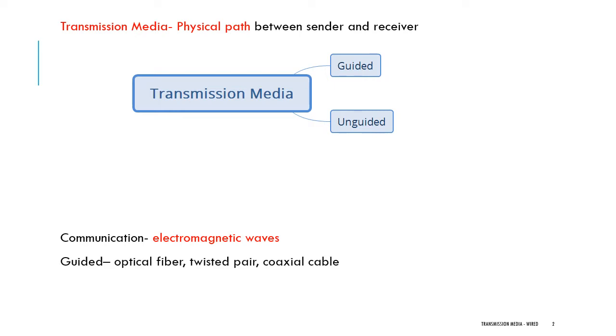In case of guided transmission media, few mediums are optical fiber, twisted pair, and coaxial cable. Few unguided transmission medias are radio transmission and satellite transmission. Let's cover guided transmission media or wired transmission media in this lecture.